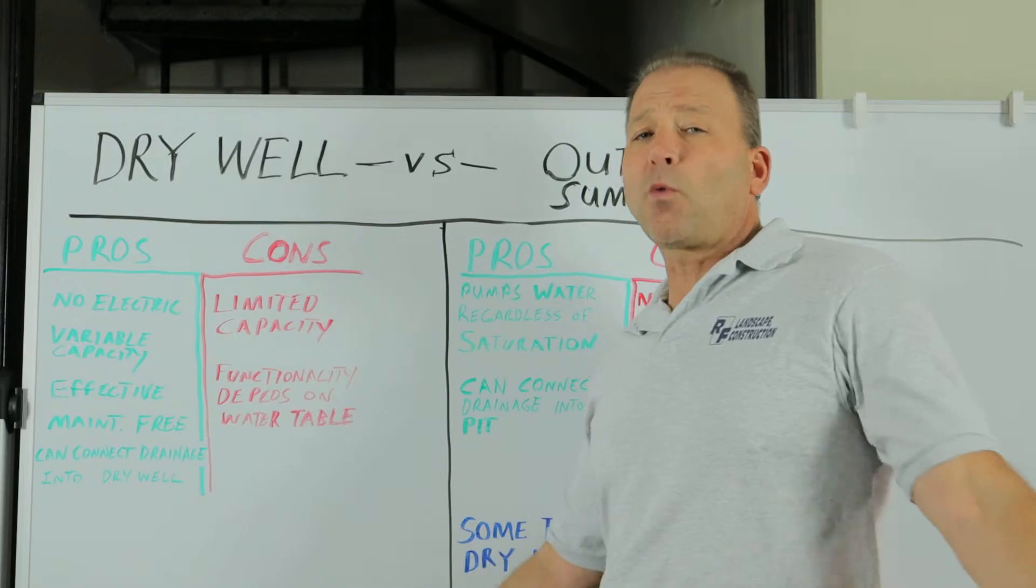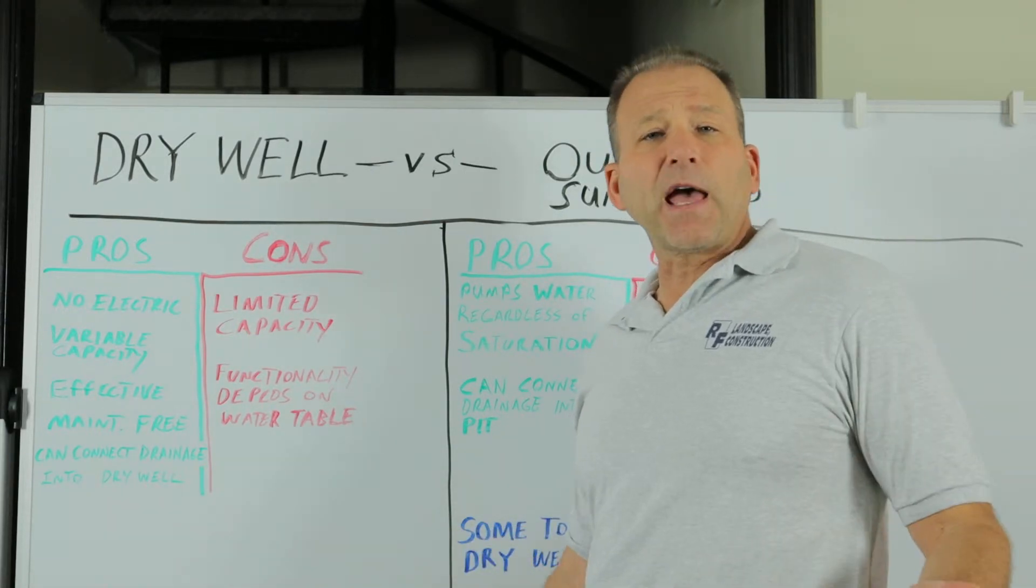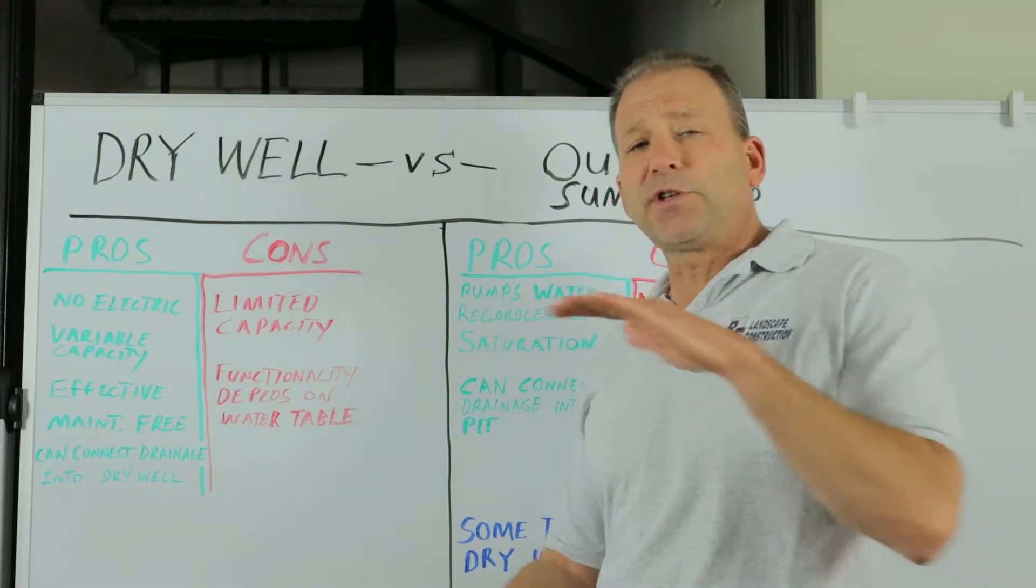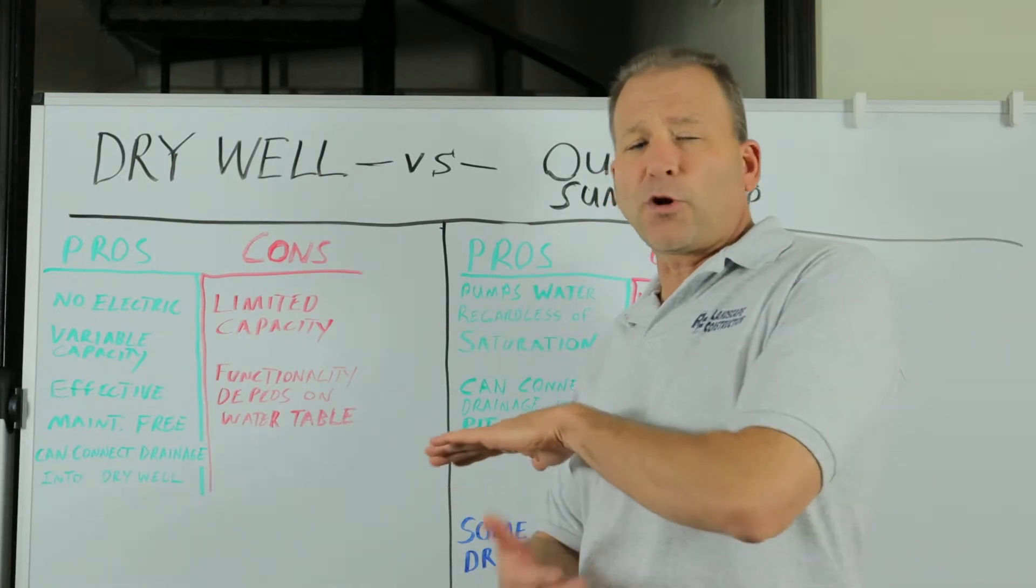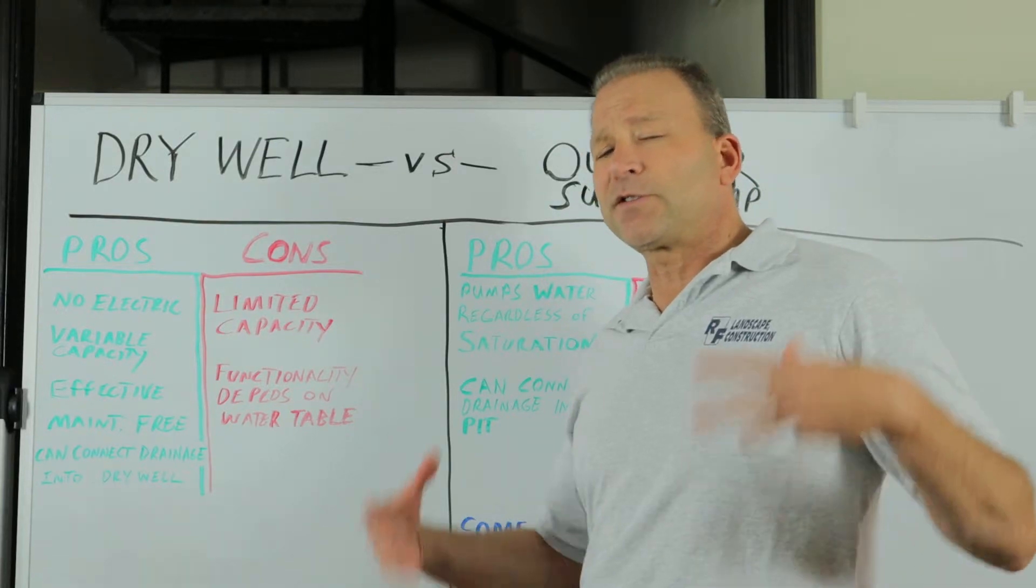Certain areas are going to have a higher water table than others. That's also going to depend on how much rainfall you get. If you have, for example, a foot of snow, the ground is frozen, then all of a sudden the temperatures warm up and it starts raining.